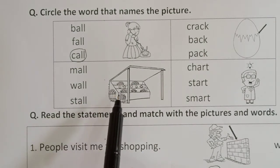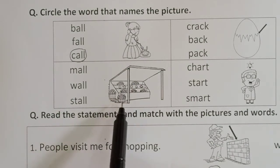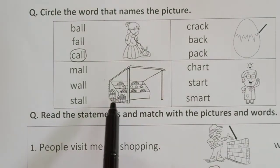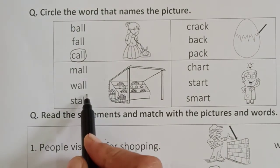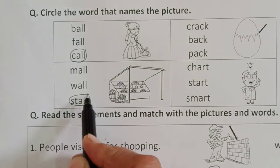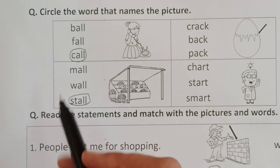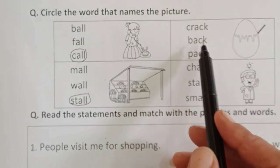What is this picture? Yes, this is a picture of a stall. Stall — in a stall you can see different vegetables and food items. So the word is stall. You have to circle 'stall' according to the picture.